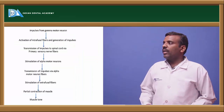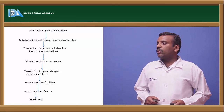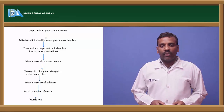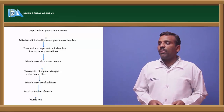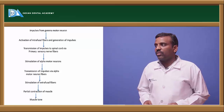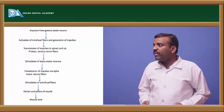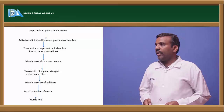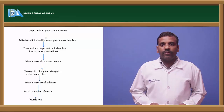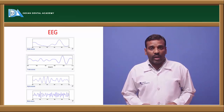The proprioceptor reflex pathway: impulses from gamma motor neurons activate intrafusal fibers, which transmit impulses to the spinal cord via primary sensory nerve fibers. This stimulates alpha motor neurons, which then stimulate extrafusal fibers, causing partial contraction of the muscle.